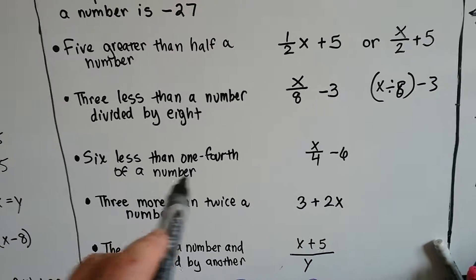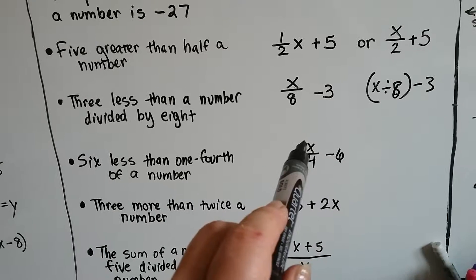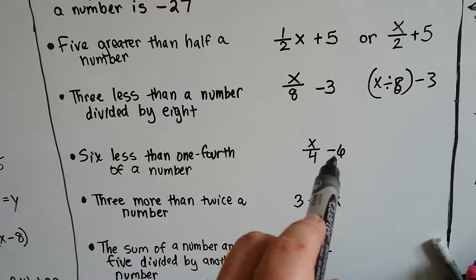6 less than 1 fourth of a number, you would take that number x and divide it by 4, and it would be 6 less, minus 6.